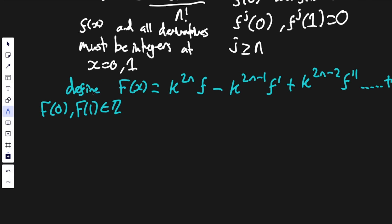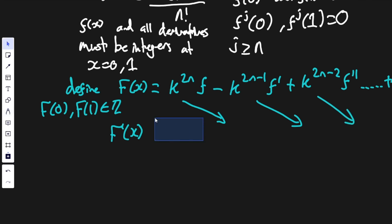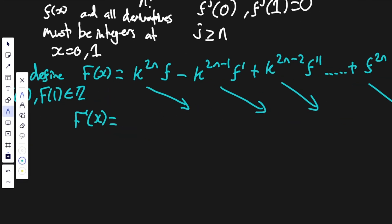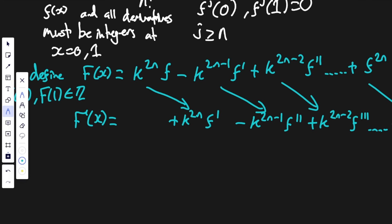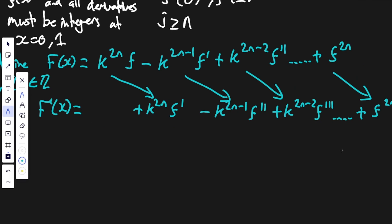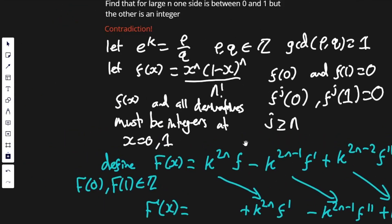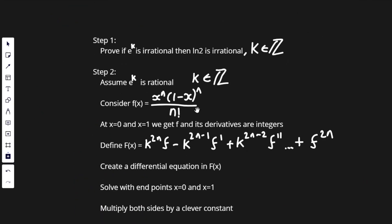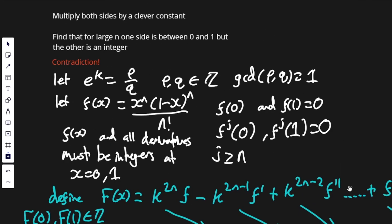Next, we try to form a differential equation by differentiating capital F of x. Using diagonal differentiation, F prime of x equals k to the 2n times f prime, minus k to the (2n minus 1) times f double prime, plus k to the (2n minus 2) times f triple prime, dot dot dot, plus f to the (2n plus 1). Now, f to the (2n plus 1) is zero because f of x is a polynomial of degree 2n — differentiating it 2n plus 1 times gives zero.